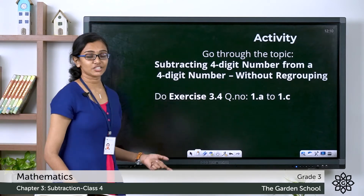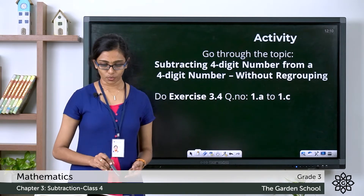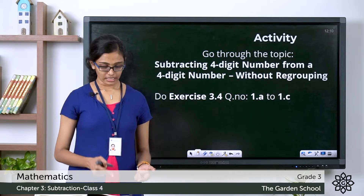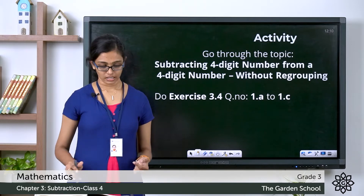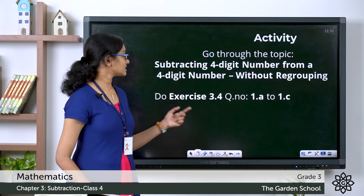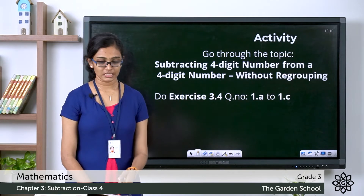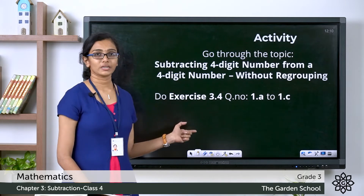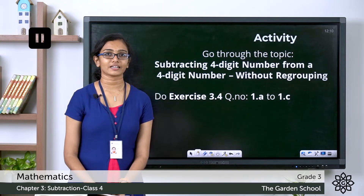I hope this is clear to you. You have to go through the topic 'subtracting a 4-digit number from a 4-digit number without regrouping' in your textbook, which is on page number 40. After that you have to move on to exercise 3.4 and do questions 1a, 1b, and 1c. You can pause the video, finish the activity, and come back.